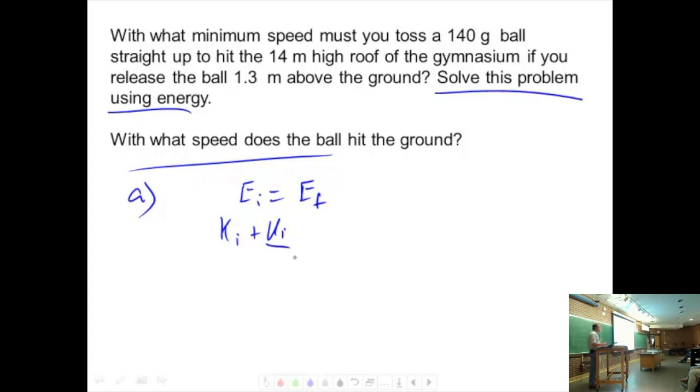Does it have any initial potential energy? What does the problem say? Yep. Speak a little louder. 1.3 meters above the ground initially, yes. So this tells me it started out with some potential energy. It's already above the ground. So there's my picture. 1.3 meters. Then it goes up, hits the roof up there.